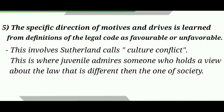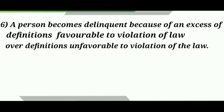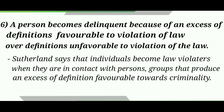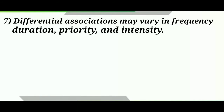The fifth point is that the specific direction of motives and drives is learned from definitions of the legal code as favorable or unfavorable. Sutherland calls this culture conflict — where juveniles admire someone who holds a different view about the law than society's, and start to adopt that person's perception rather than normal societal norms. The sixth point is that a person becomes delinquent because of an excess of definitions favorable to violation of law over definitions unfavorable to violation of law. If the majority of a group favors criminal acts, a person is more likely to follow the majority and engage in criminal activities.